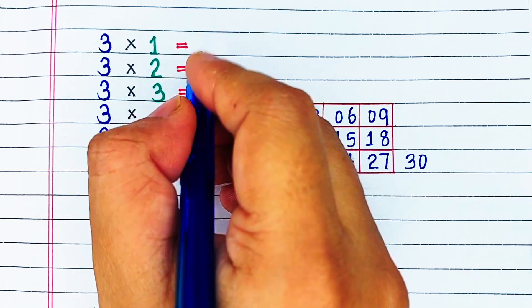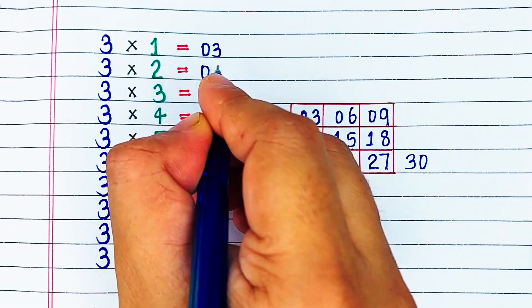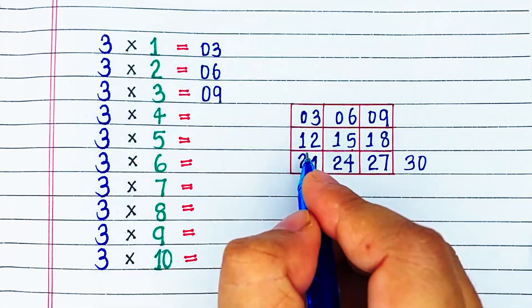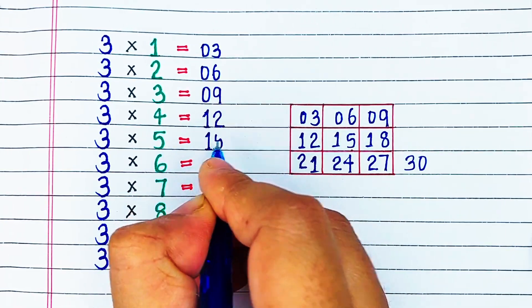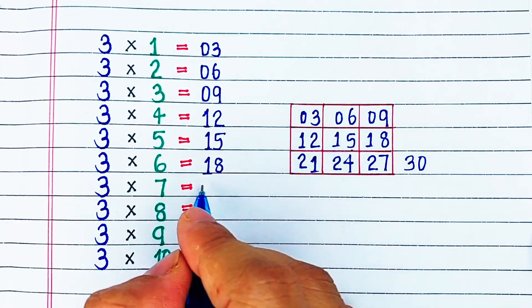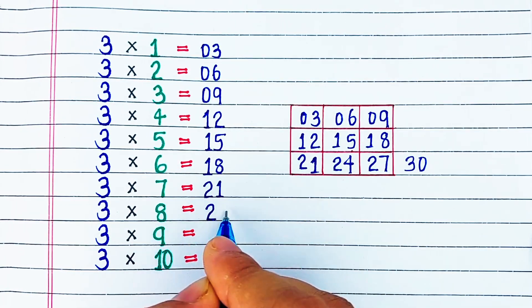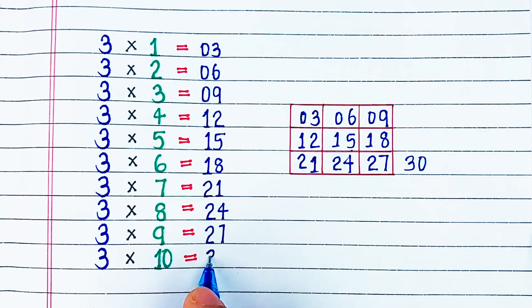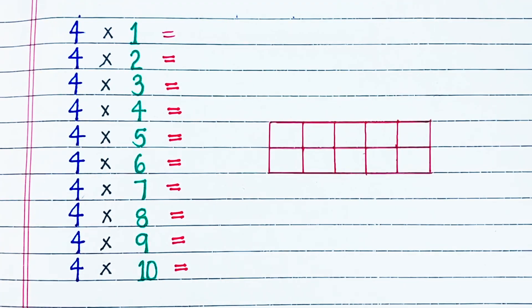Let's write: 3 1s are 3, 3 2s are 6, 3 3s are 9, 3 4s are 12, 3 5s are 15, 3 6s are 18, 3 7s are 21, 3 8s are 24, 3 9s are 27, and 3 10s are 30.